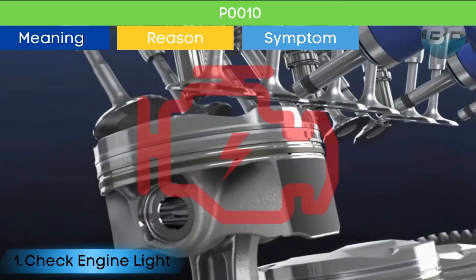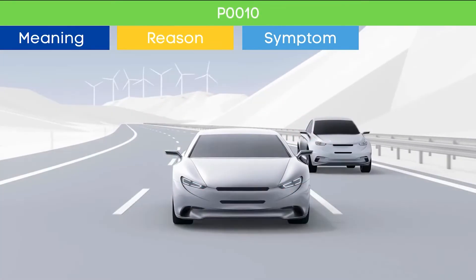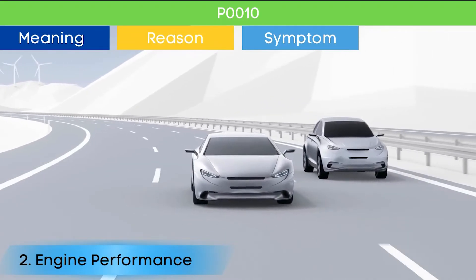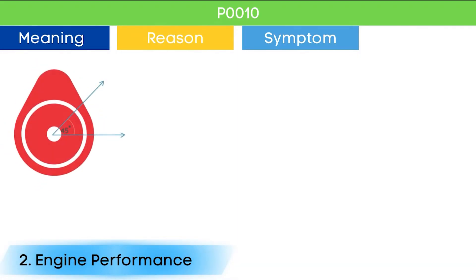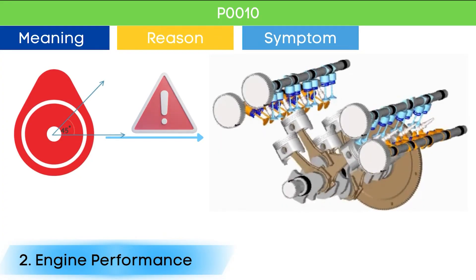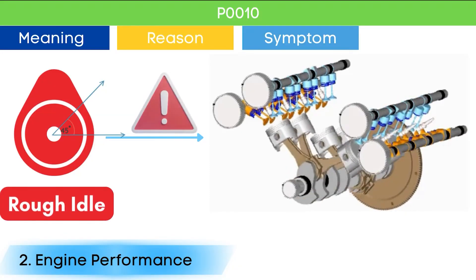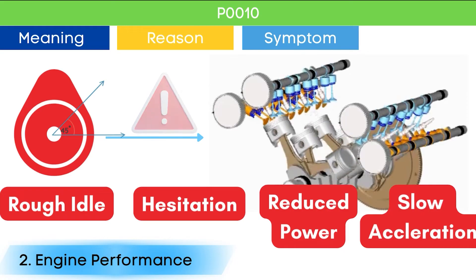Symptom number one: check engine light. The check engine light comes on if there are any active trouble codes related to EMS. Symptom number two: poor engine performance. Problems in the cam position actuator circuit can lead to incorrect cylinder valves opening and closing. This can manifest as rough idle, hesitation, reduced power, and sluggish acceleration.